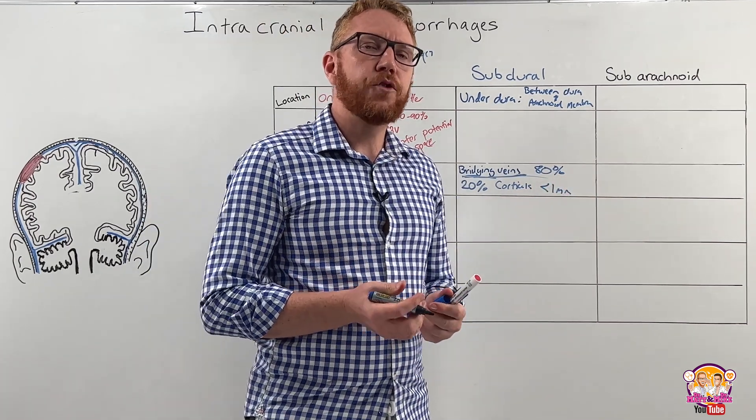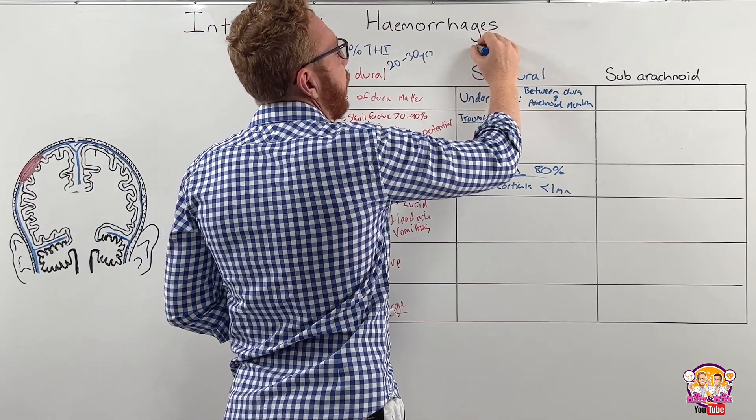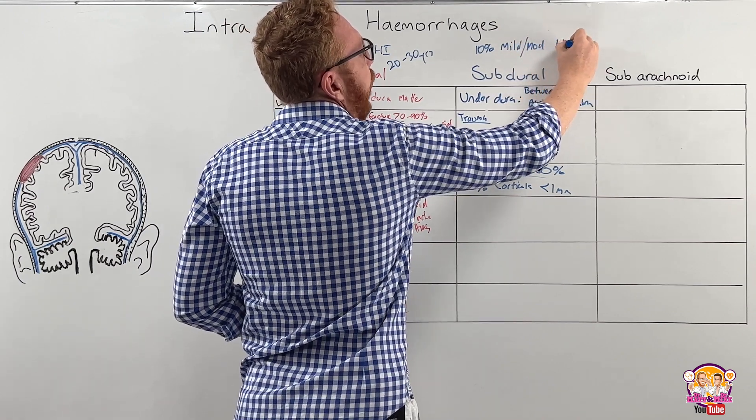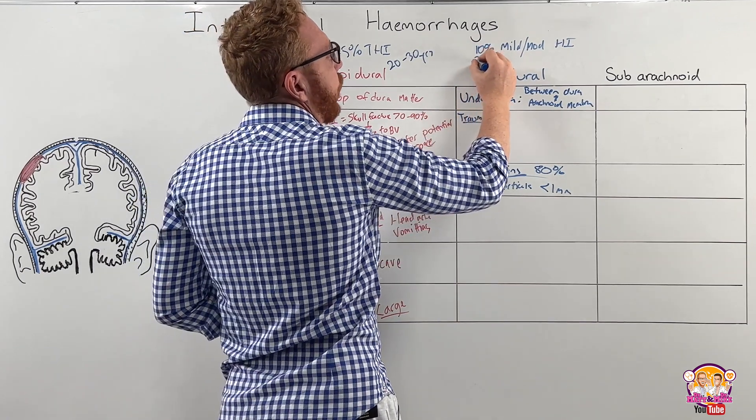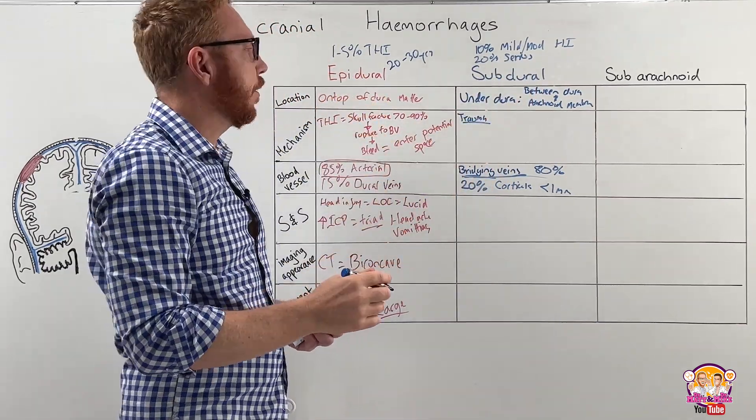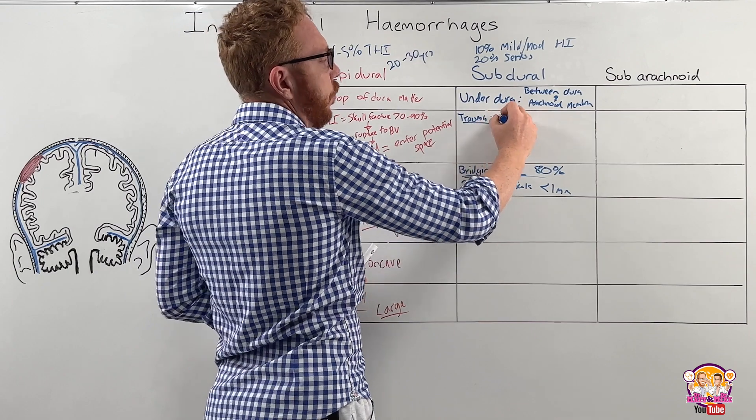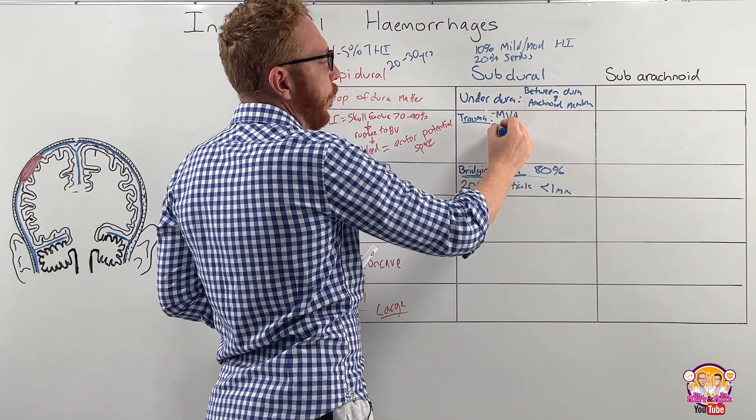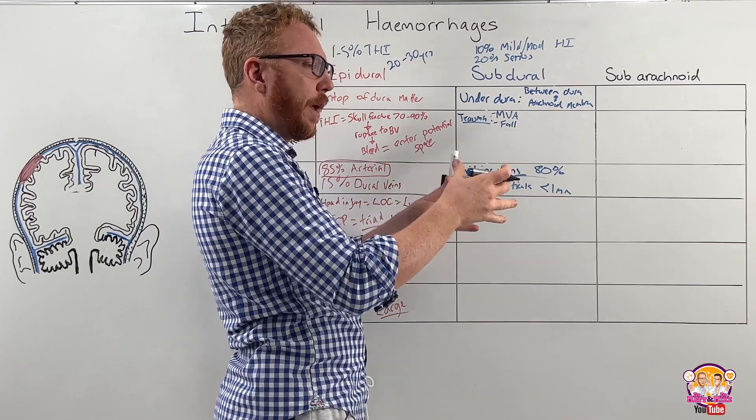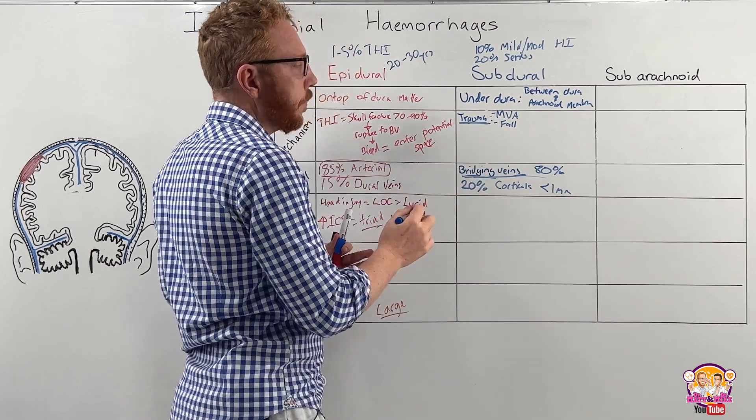The mechanism that leads to a subdural bleed is trauma. So like we saw with the epidural bleeds, subdural, about 10% of mild to moderate head injuries results in a subdural bleed, whilst about 20% of serious head injuries result in a subdural bleed. So they're more common than the epidural bleeds. Trauma, it also depends on the individual's age. Trauma in a younger adult is usually by a motor vehicle accident. In an elderly person, it's usually a fall. And in infants, it's through the shaking baby syndrome. So shaking the baby, which causes a coup, counter coup, acceleration, deceleration injury.